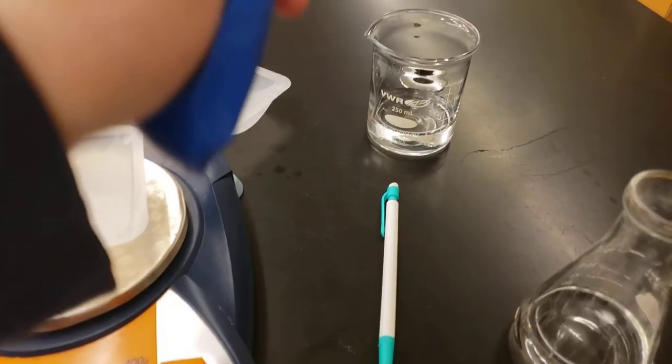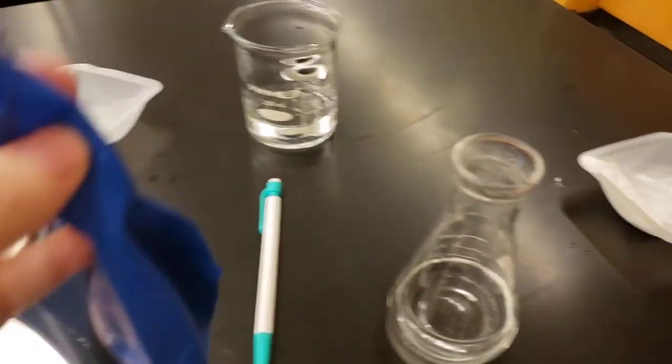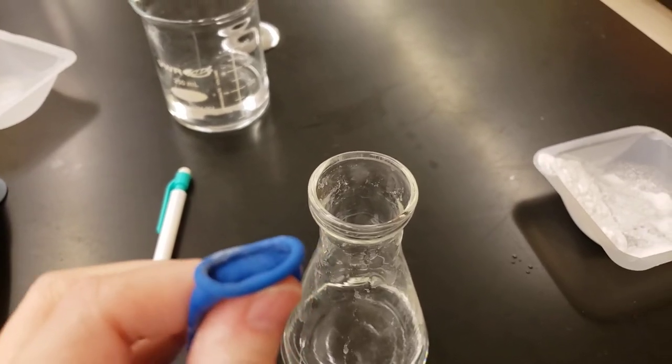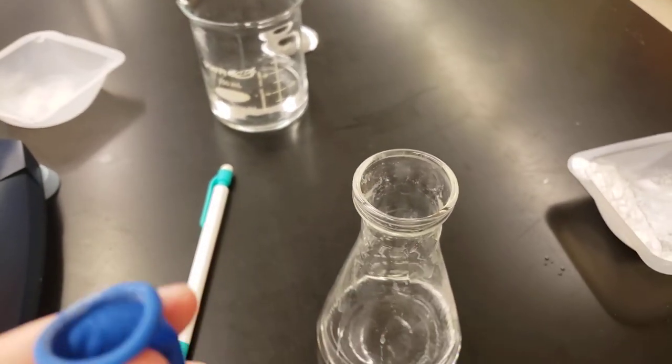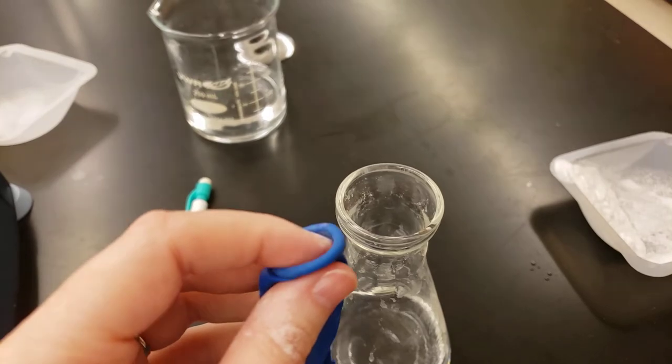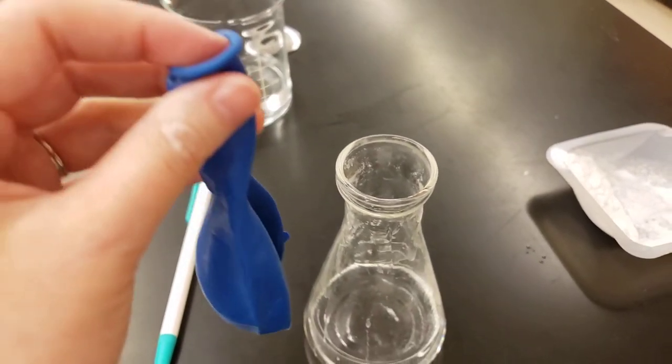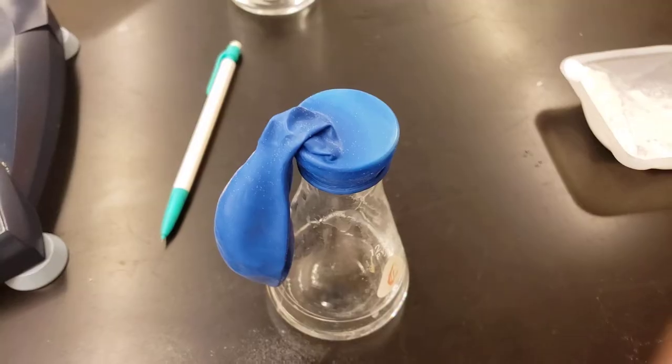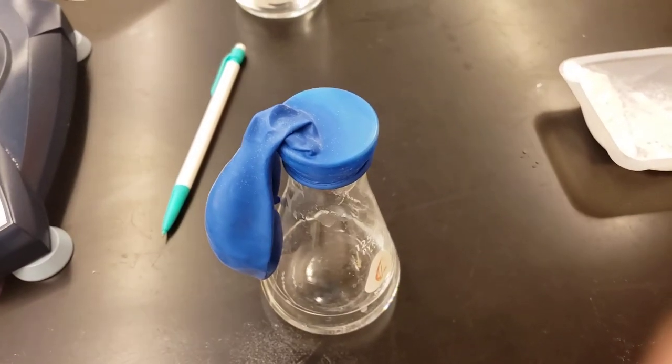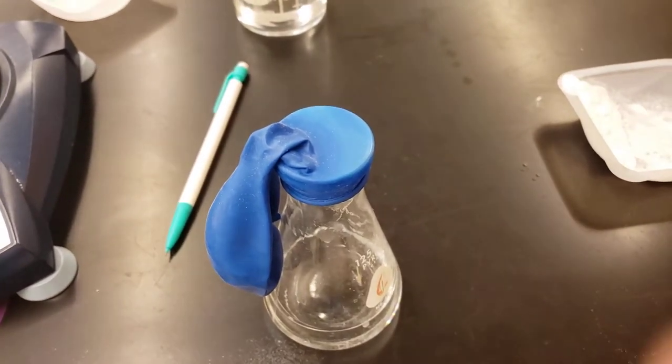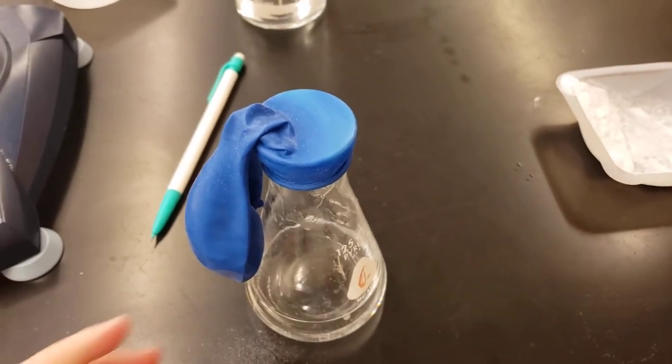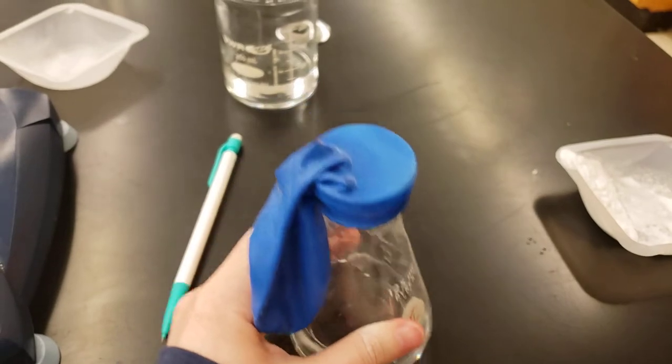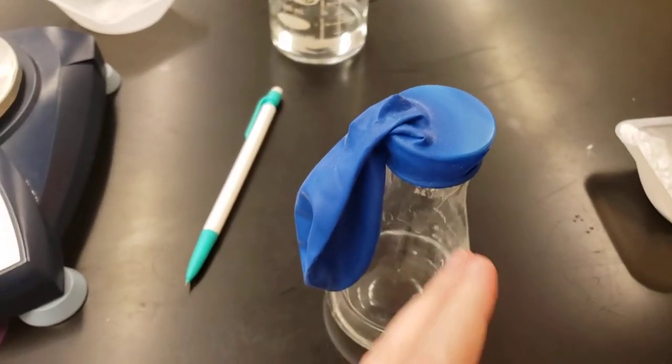Now I have my balloon with all the baking soda in the bottom. Next I'm going to stretch the mouth of my balloon over my Erlenmeyer flask so that it completely covers it while keeping the balloon on the downside. So I've stretched the balloon over the Erlenmeyer flask and all the baking soda is still down here. The vinegar is in my Erlenmeyer flask and I'm ready for my chemical reaction to start.